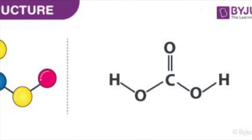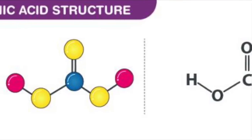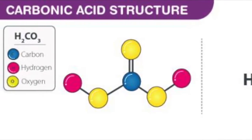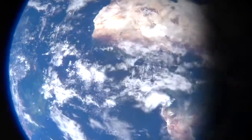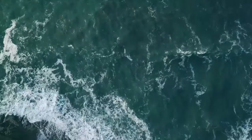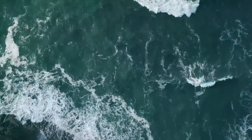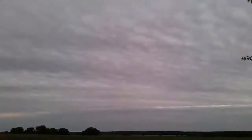Carbon ions in the atmosphere bond with water to create a weak acid called carbonic acid. This falls from the earth as rain, which dissolves rocks and other earth formations. The carbon in the rocks releases into rivers, which carry ions into the ocean, which are then released into the air as carbon dioxide — and the process begins again.